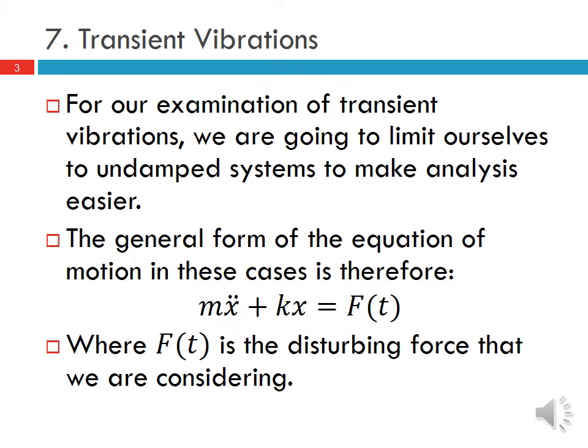For our examination of transient vibrations, we're going to limit ourselves to the undamped case to make the analysis easier. The general form of the equation of motion in these cases is mx double dot plus kx is equal to F(t), where F(t) is the disturbing force that we are considering.